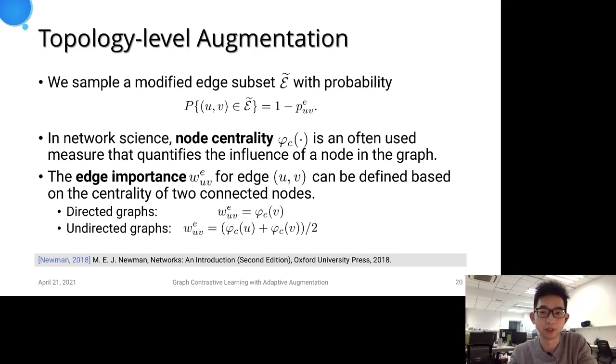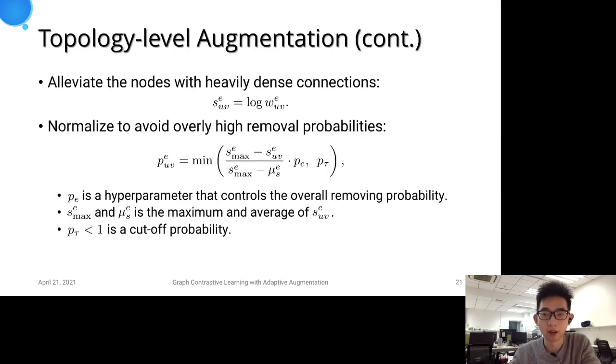In network science literature, node centrality is a widely used measure to quantify the influence of a node, and we derive edge importance from the centrality scores of nodes at the two ends. To alleviate the impact of nodes with heavily dense connections and overly high removal probabilities, we further transform the edge importance followed by a normalization step.